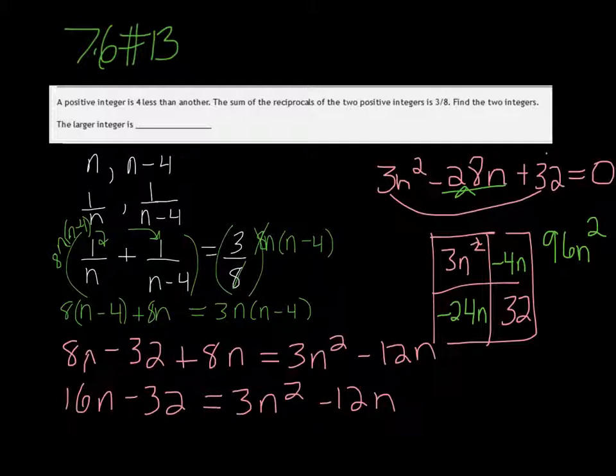So factor out the GCF of the top two boxes, and that's just n. And what's left, you put on top here, so you get 3n and minus 4. And factor out the GCF of the bottom, which is 8. But 3n times 8 is not negative 24, so we need to make that a minus 8.